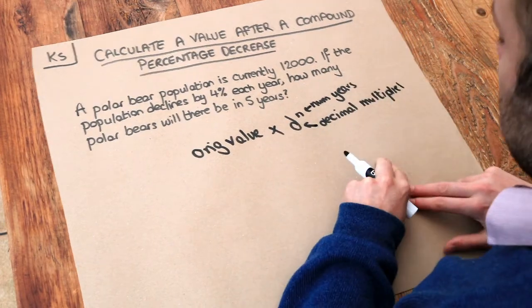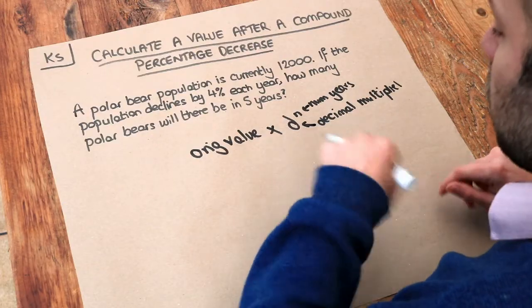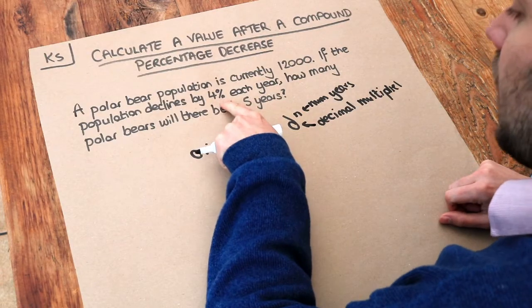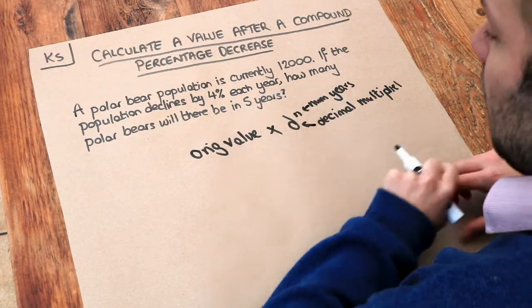Now let's think what this decimal multiplier is. The decimal multiplier is what you times by each time to, in this case, decrease by 4% each year.